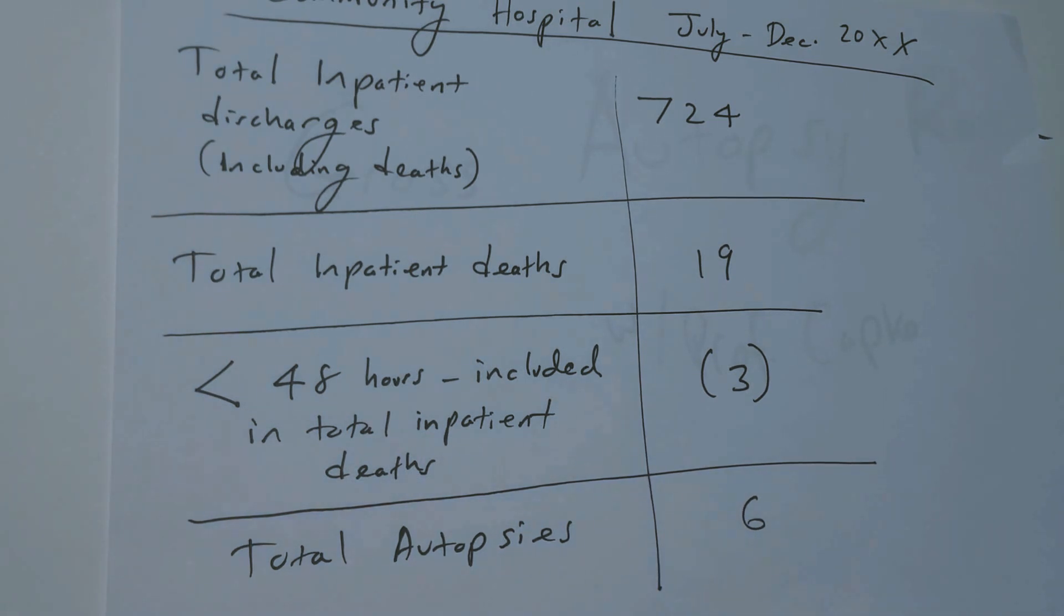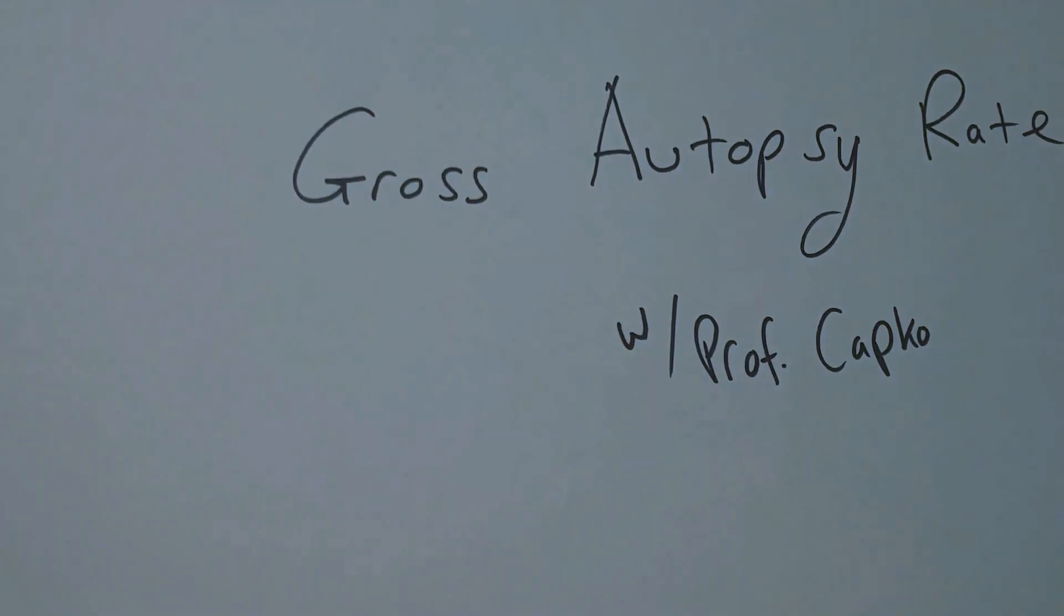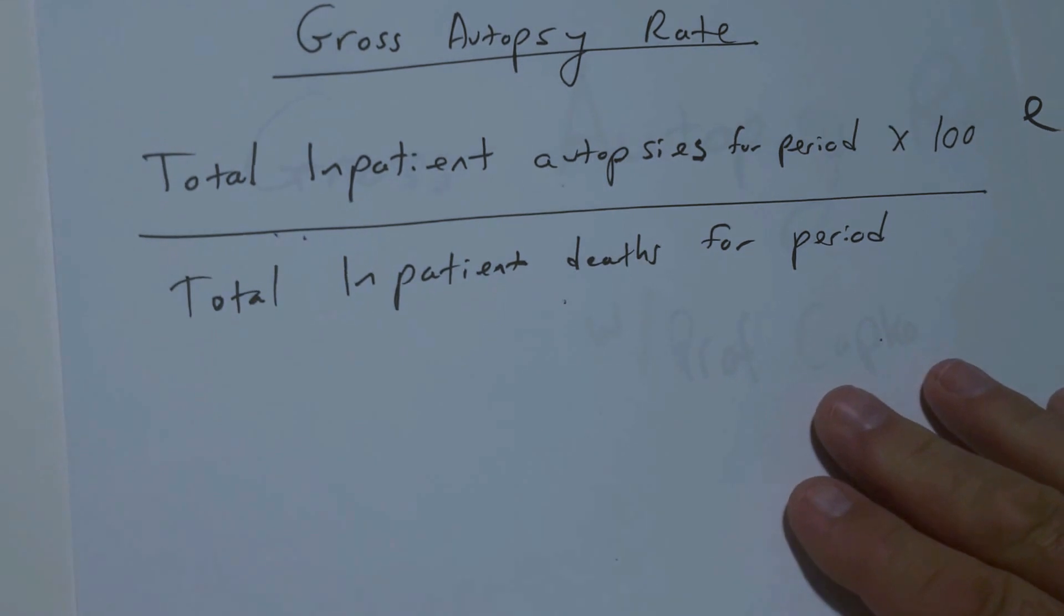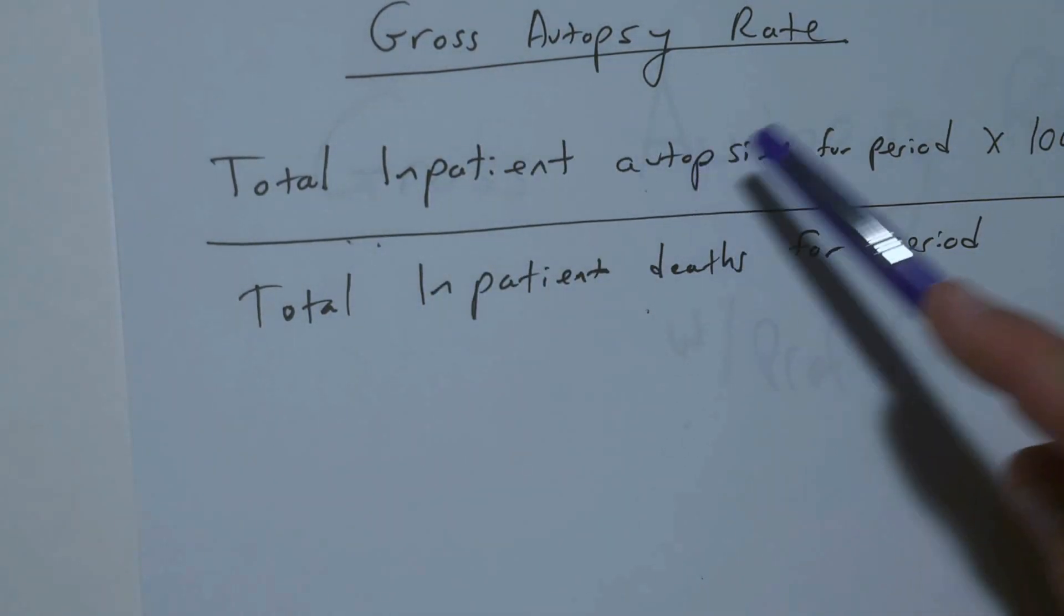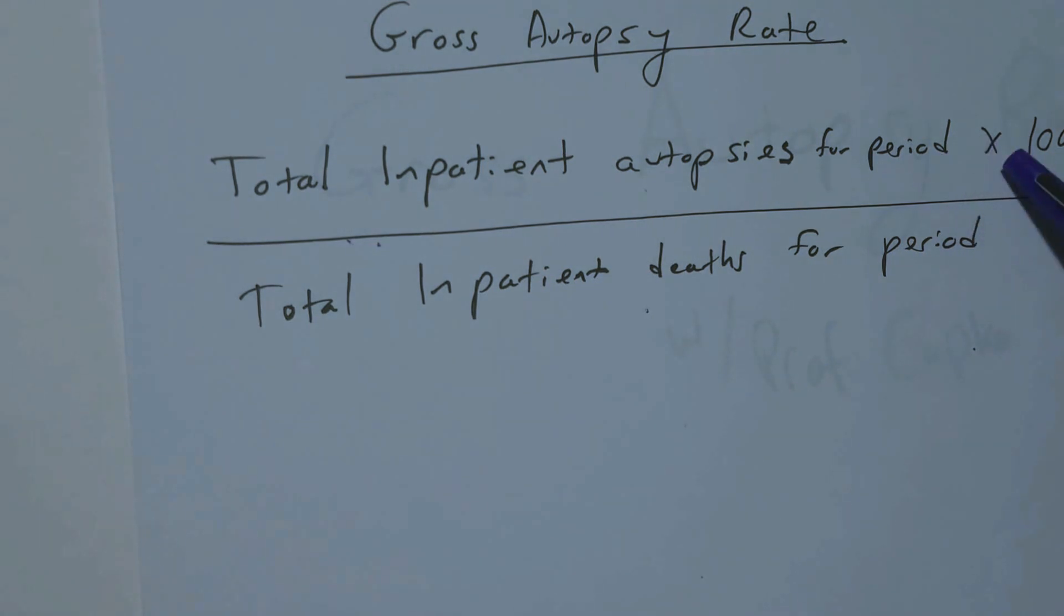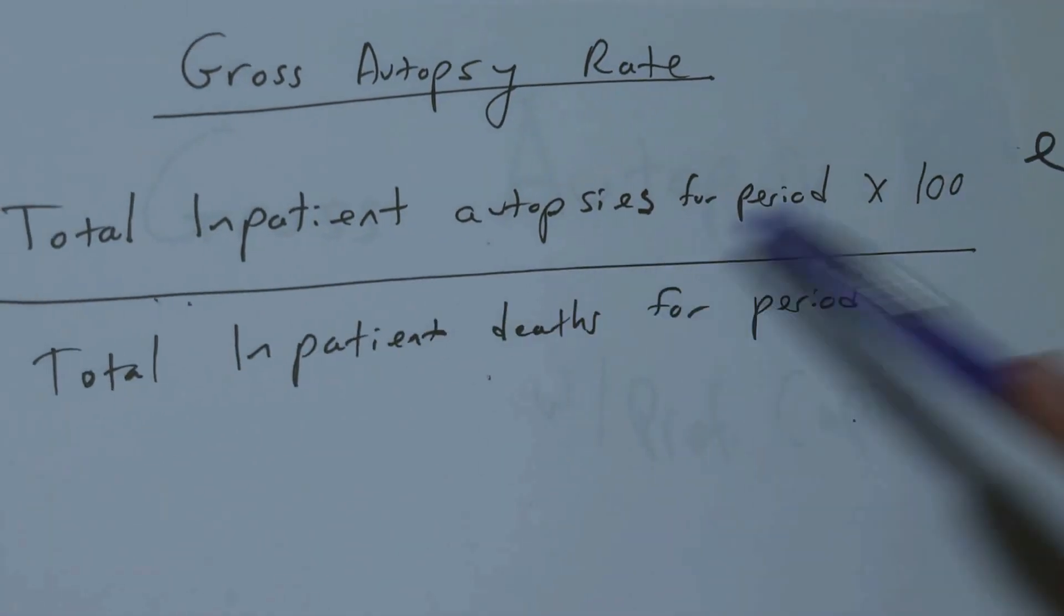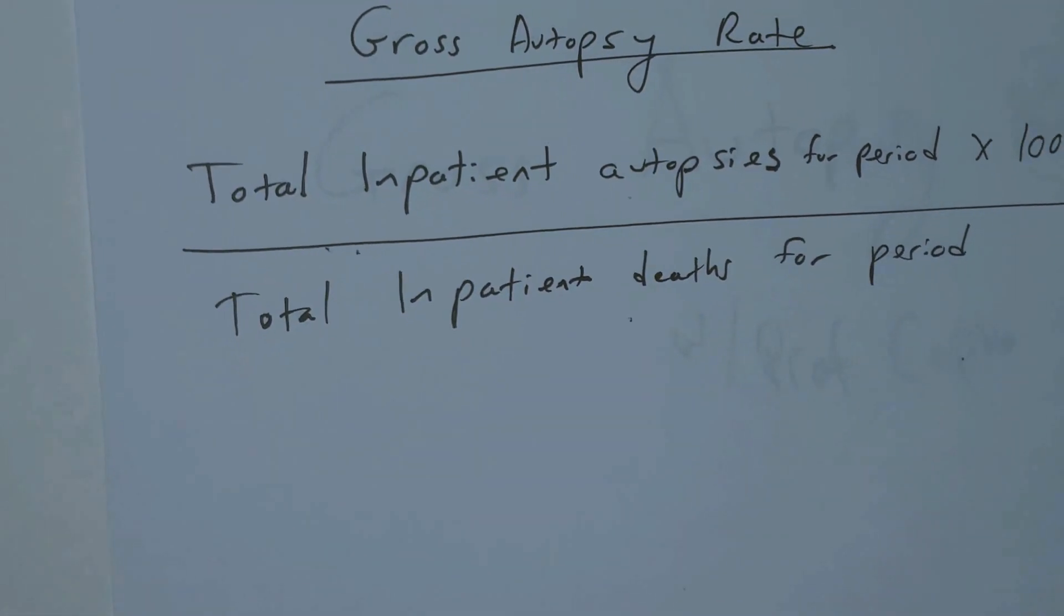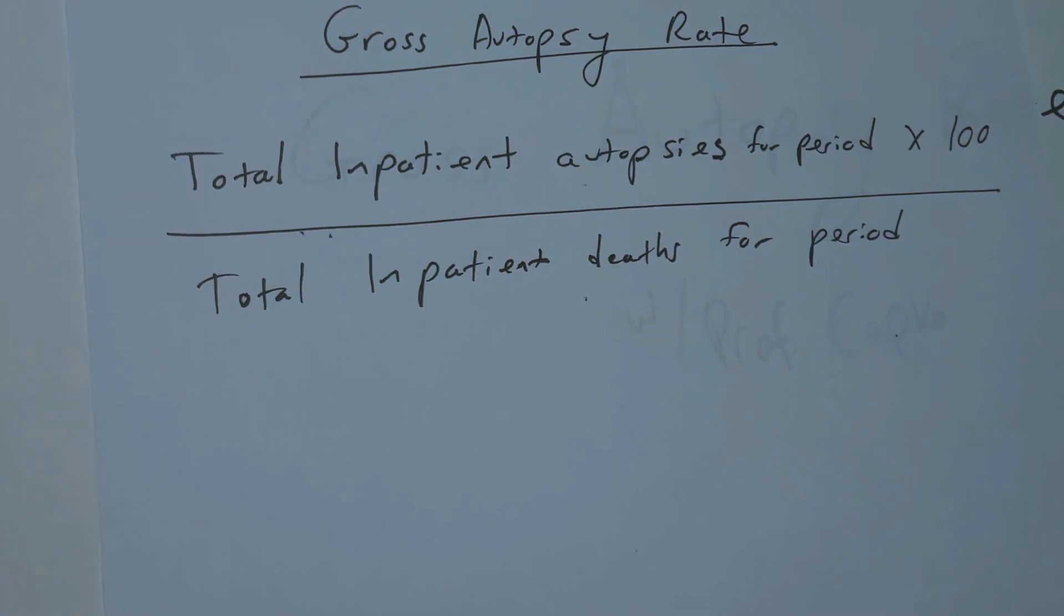So we're going to utilize this data to calculate some information here. For example, the formula for calculating the gross autopsy rate is going to be the total inpatient autopsies for the period times 100 because we're looking for a percentage. That's your numerator and your denominator you have total inpatient deaths for the period. You're going to divide the numerator by the denominator.